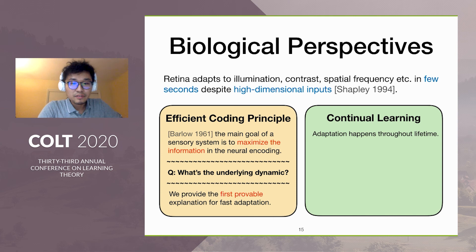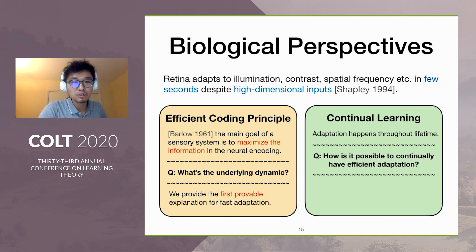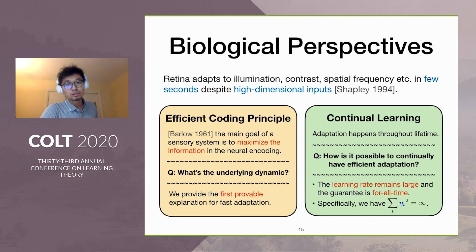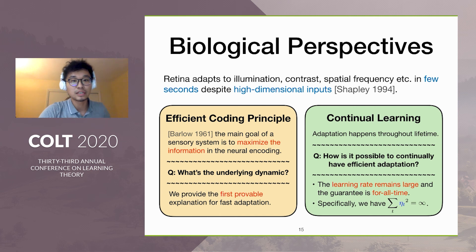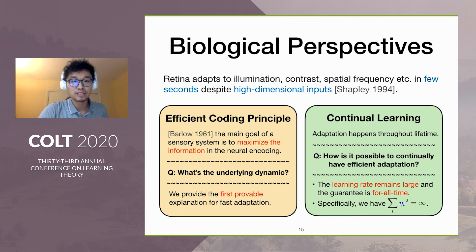The second biological perspective is continual learning. As the living system constantly changes environment, we expect adaptation to happen throughout the lifetime efficiently. Recall that in our main theory, the learning range can be quite large even when time is large, and also the guarantees are for all time. This suggests that biological Oja's rule can last for a long time and provide an explanation for retina having continual learning.